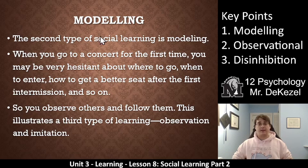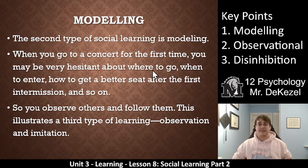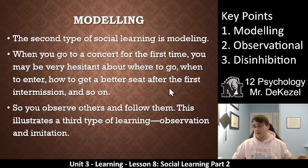Modeling is the second type of social learning after cognitive learning. So when you go to a concert for the first time as an example, you might be hesitant about where to go, when to enter, how to get a better seat after the first intermission and so on. At your first concert you'll probably observe others and follow them.